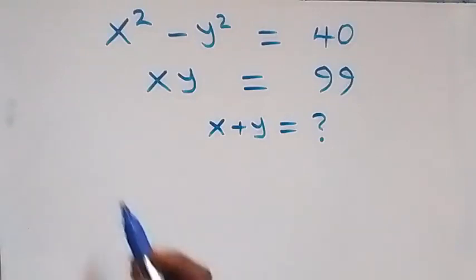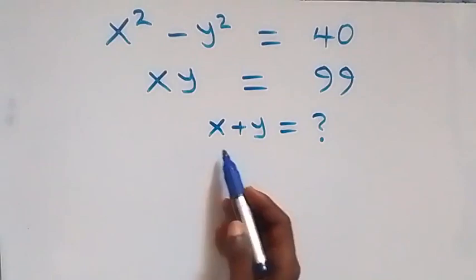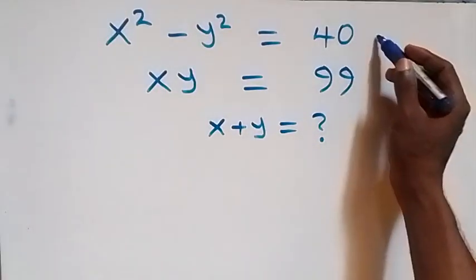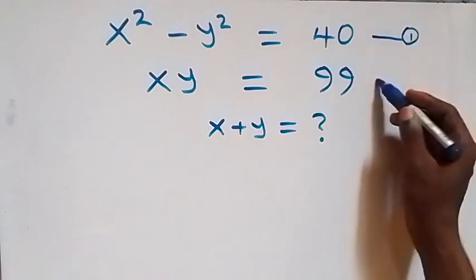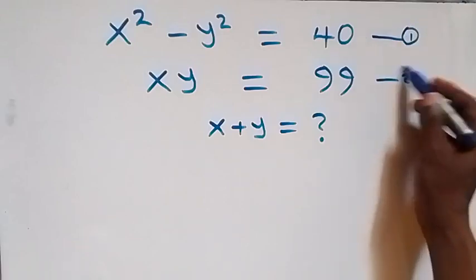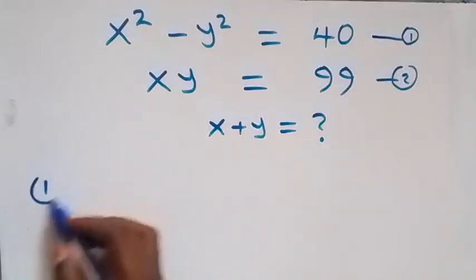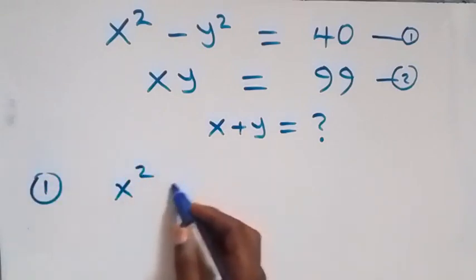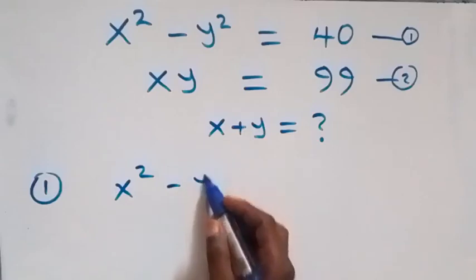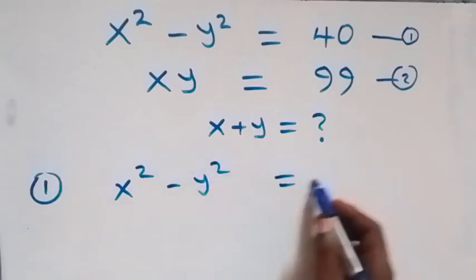Hello, you are welcome. How to solve this nice system of equations to find x plus y. Let's label this as equation one and equation two. Then from equation one we have x squared minus y squared equals 40.